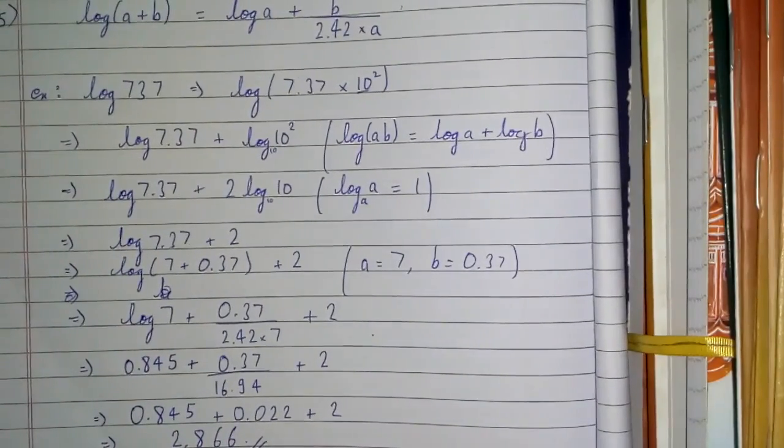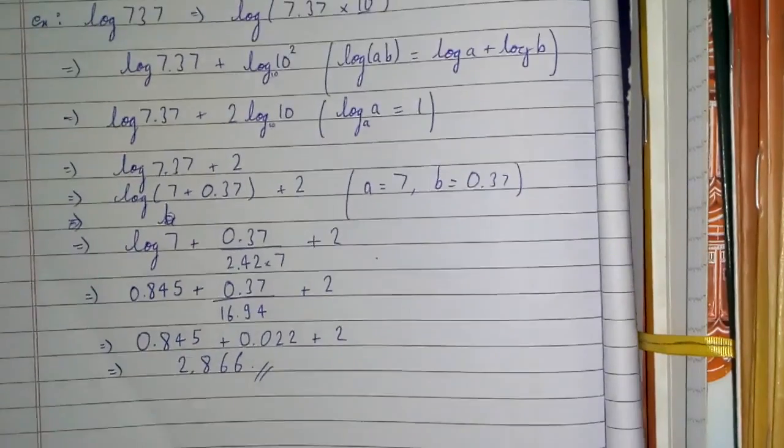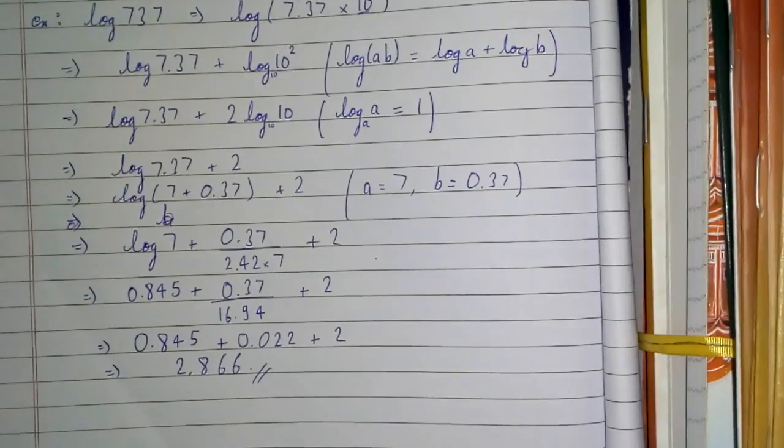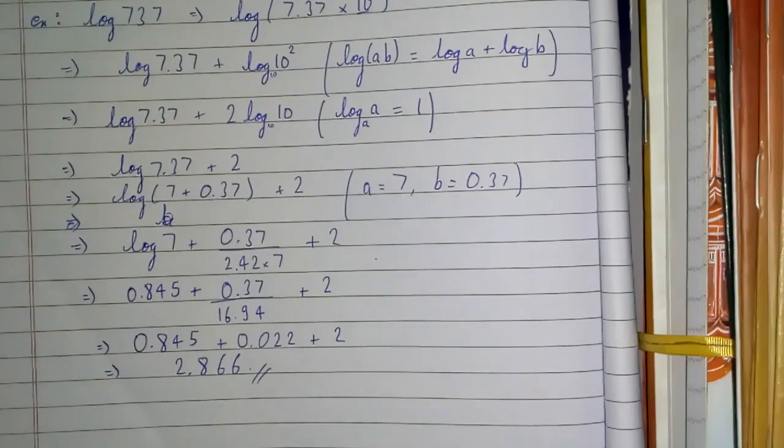You can check in your calculator that log 737 is approximately 2.866. Thank you for watching. I hope you enjoyed it. If you need more examples, just comment the number and I will make more videos. Please like and subscribe.